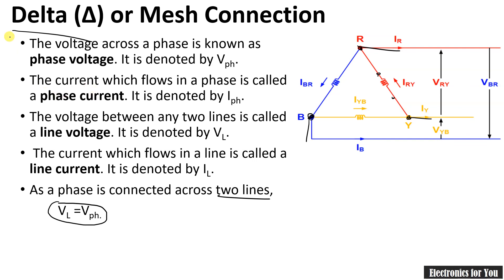To summarize: the definitions for phase voltage, phase current, line voltage, and line current remain the same for both connections. The key difference is that VL equals VPH in case of delta connection, and IL equals IPH in case of star connection. If you like this video, please share it with your friends and please subscribe to our channel. Thank you.